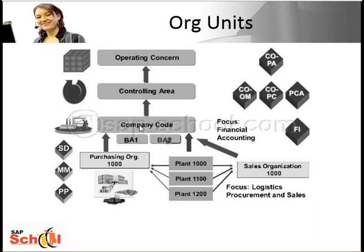You can assign more than one company code to a controlling area, and that enables controlling across various company codes. A company code is an independent accounting unit. Financial and profit and loss statements are prepared at company code level to meet legal reporting requirements. Then you have business areas, which are used to group strategic business fields and to report in financial and profit and loss statements. Business areas can also be cross company code, but they are not suitable for auditing — they are only used for reporting purposes at the internal company level.